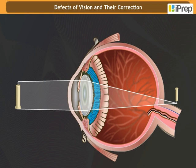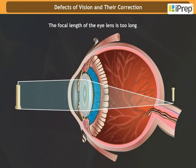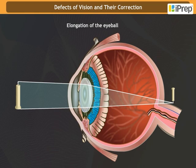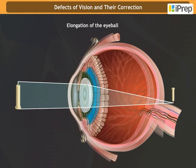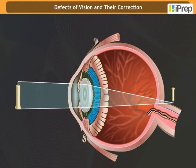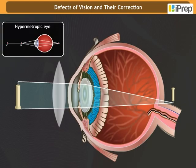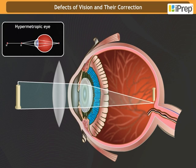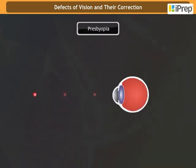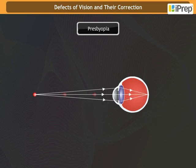This is because light rays from a close-by object are focused at a point behind the retina. This defect arises either because the focal length of the lens is too long or the eyeball has become too small. It can be corrected by using a convex lens of appropriate power. Eyeglasses with converging lenses provide the additional focusing power required for forming the image on the retina.